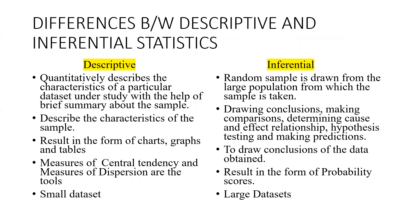Now let us understand the differences between descriptive and inferential statistics. Descriptive statistics describes the important characteristics or properties of the data using central tendency like mean, median, or mode, and the measures of dispersion like range, standard deviation, variance, etc. The data can be summarized and represented in an accurate way using charts, tables, and graphs.